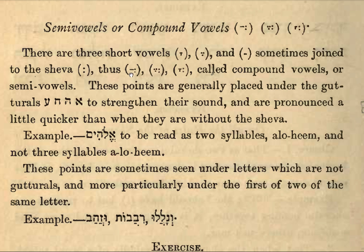So: ah-eh — like that, very fast. For example here, Elohim. That is two syllables: elo-him. And not three syllables: ah-lo-him.